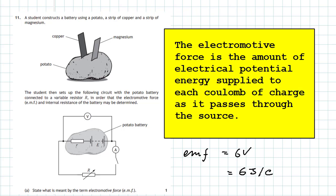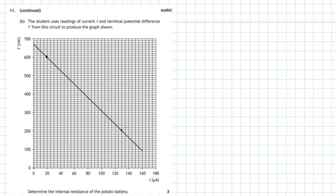So all you have to say is remember that statement: the electromotive force is the amount of electrical potential energy, measured in joules, supplied to each coulomb of charge as it passes through the source. Question 11b: the student uses readings of current I and terminal potential difference V from the circuit to produce the graph shown.